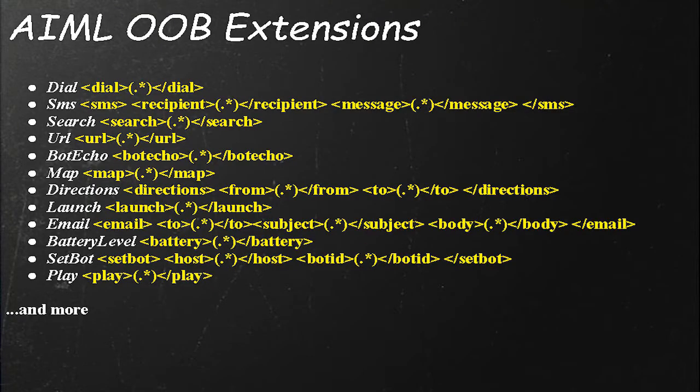Here's a list of some of the OOB extensions we've developed so far: dialing, SMS to a recipient and a message, searching the web, opening a URL. The Bot Echo service, which I'll talk about in another slide, is a very exciting development. Look for a location on the map, find directions, launch an application, send an email message, check the battery level, switch the bot, play some music, and more capabilities.